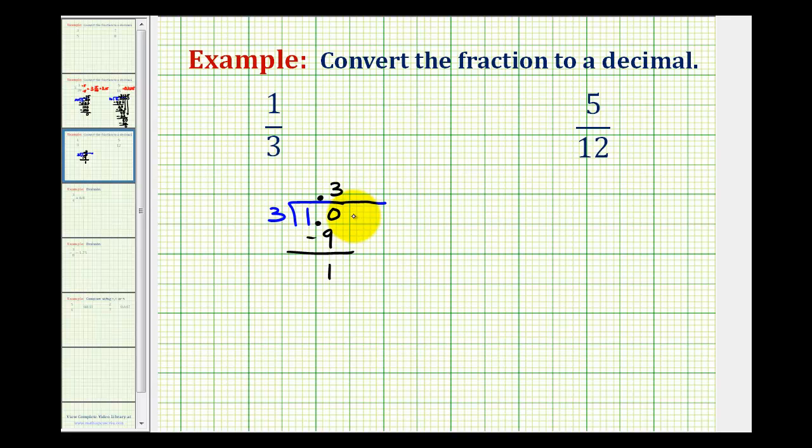So we can add another zero here, bring it down. So now we have ten, and now we ask the same question. How many threes are there in ten? Well, that would be three. Three times three is nine. We subtract. Notice how we get another one.